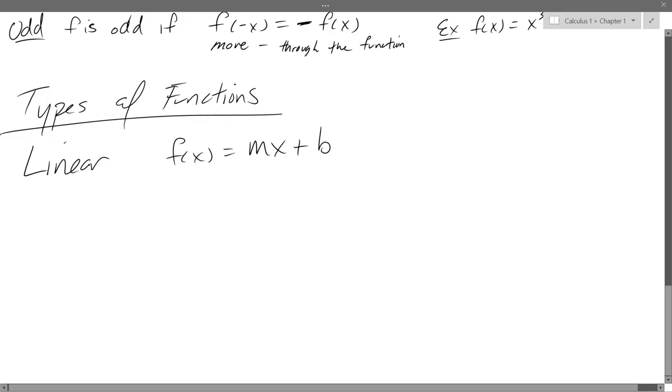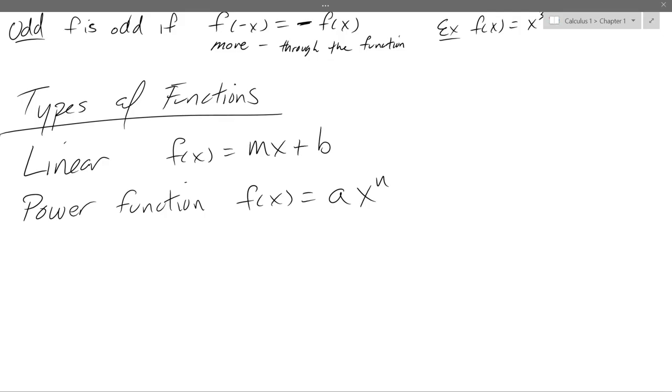What about a constant function? I didn't write that down, but a constant function would be basically no x's, just a number in there. So we got linear, a power function. A power function will just look like x to the n, so some positive integer n times number a. So there's a power function.